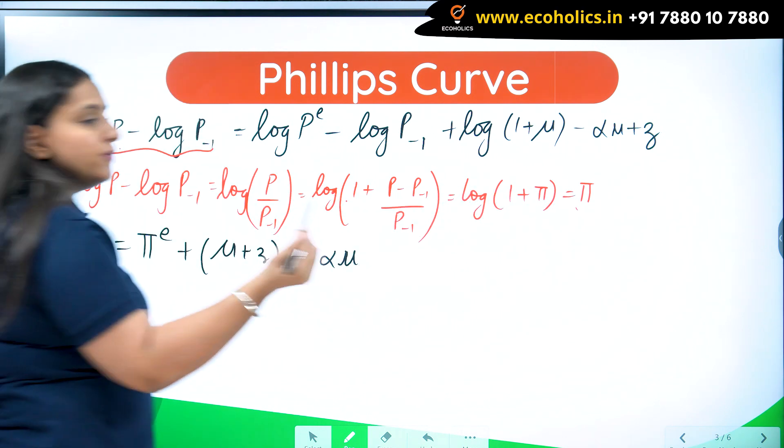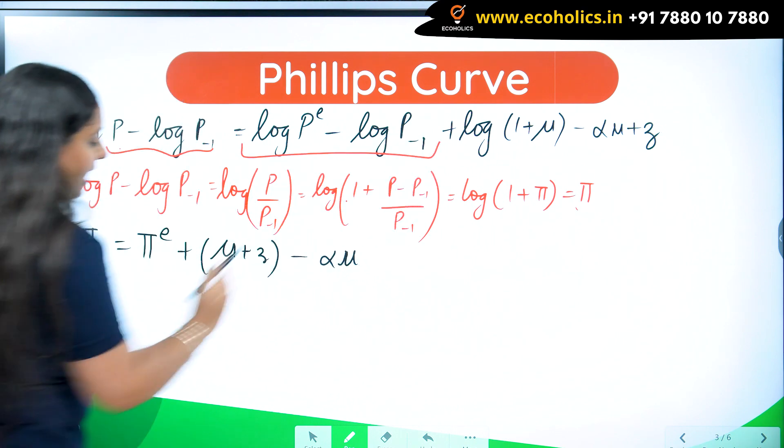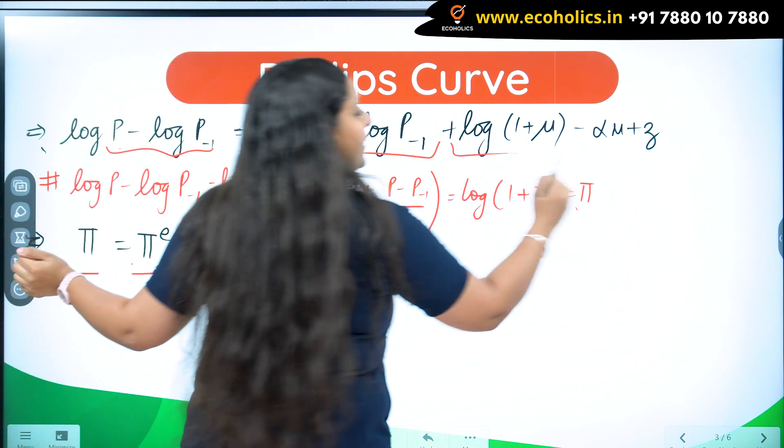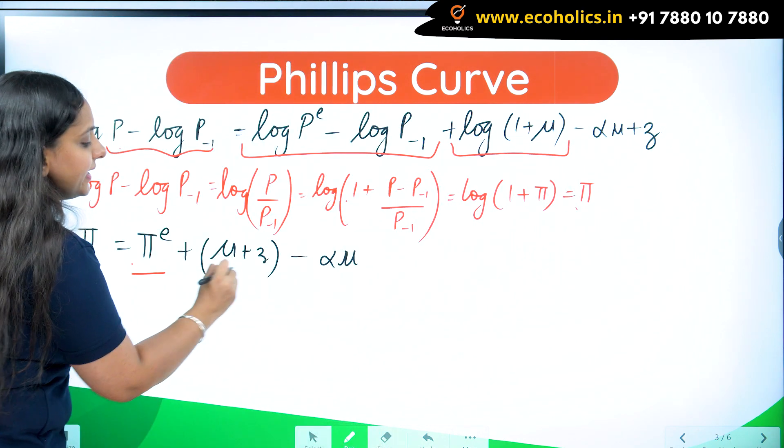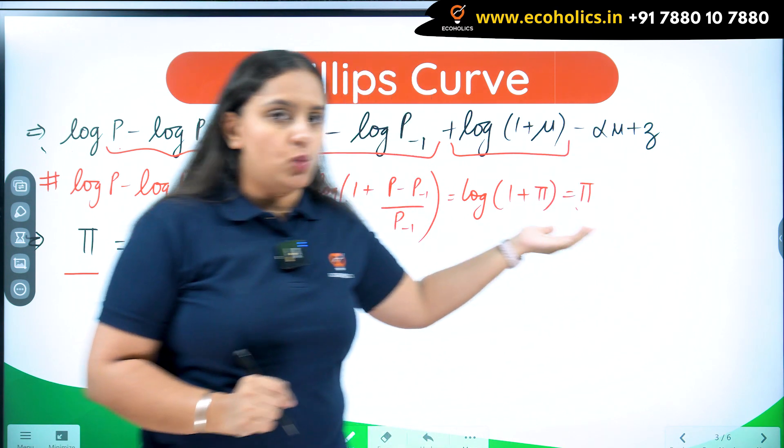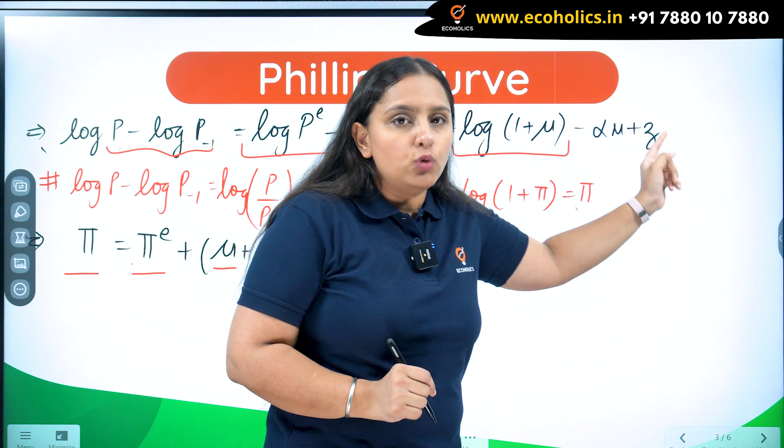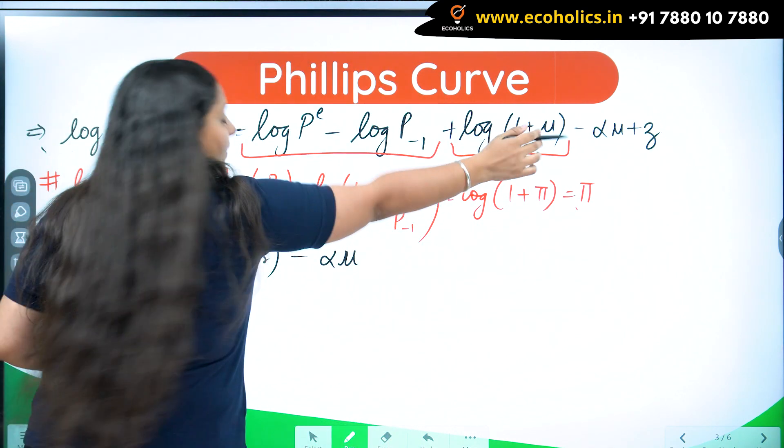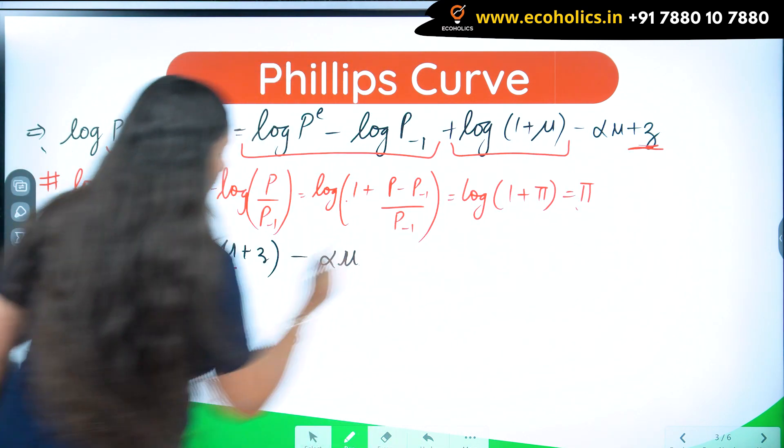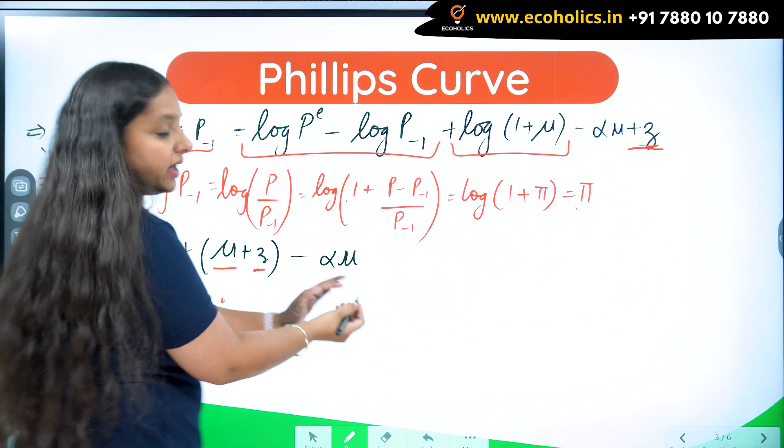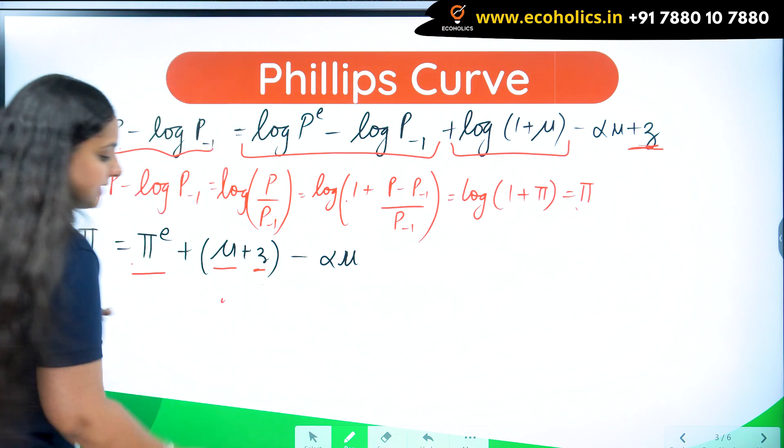With the same working, I can write this thing as pi e, expected inflation. And log(1 plus mu), I am also writing it as mu only because mu is a markup, it will also be small. So log(1 plus mu), which is a small number, is going to be equal to mu. Then z, I have written with mu minus alpha u, because they have positive effect and negative effect, I have written them separately.